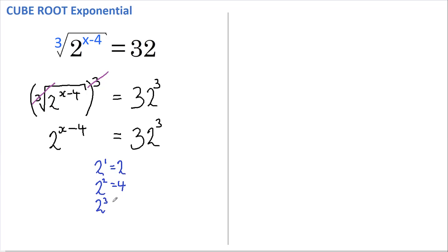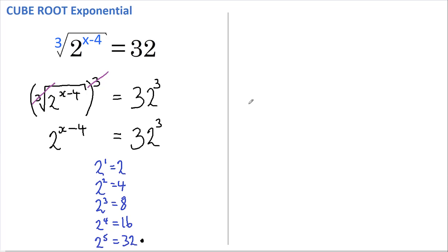2 to the power of 3 equals 8, 2 to the power of 4 equals 16, and 2 to the power of 5 equals 32. So 32 can be rewritten as 2 to the power of 5.